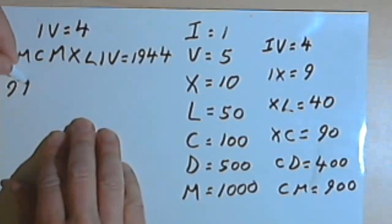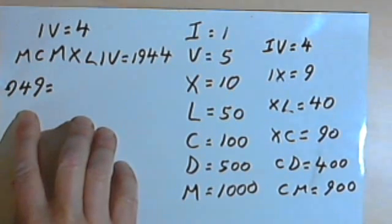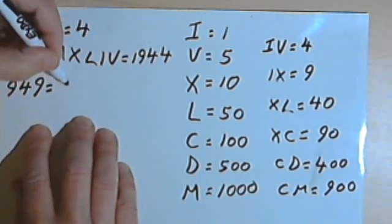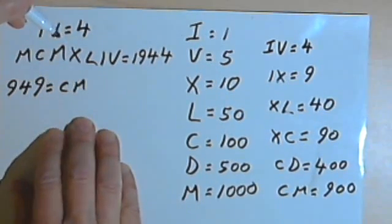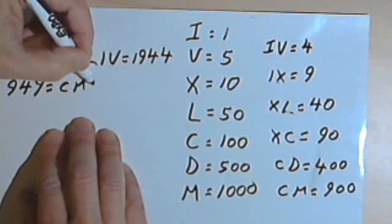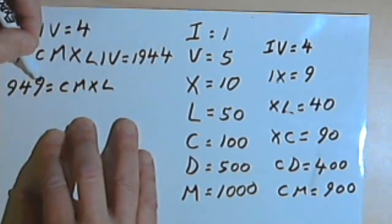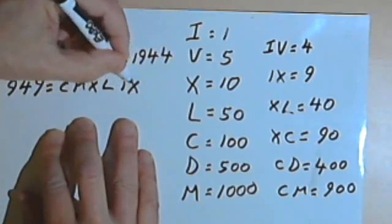Let's say we want to write 949. Well, 900 is 100 less than 1000, so I'll write CM for the 900. 40 is 10 less than 50, so I'll write XL, and 9 is 1 less than 10, so I'll write IX.